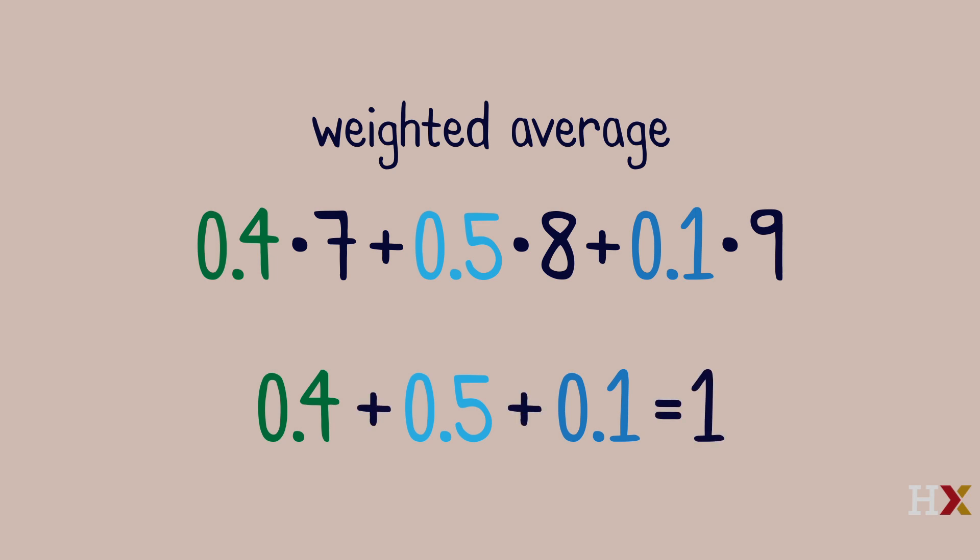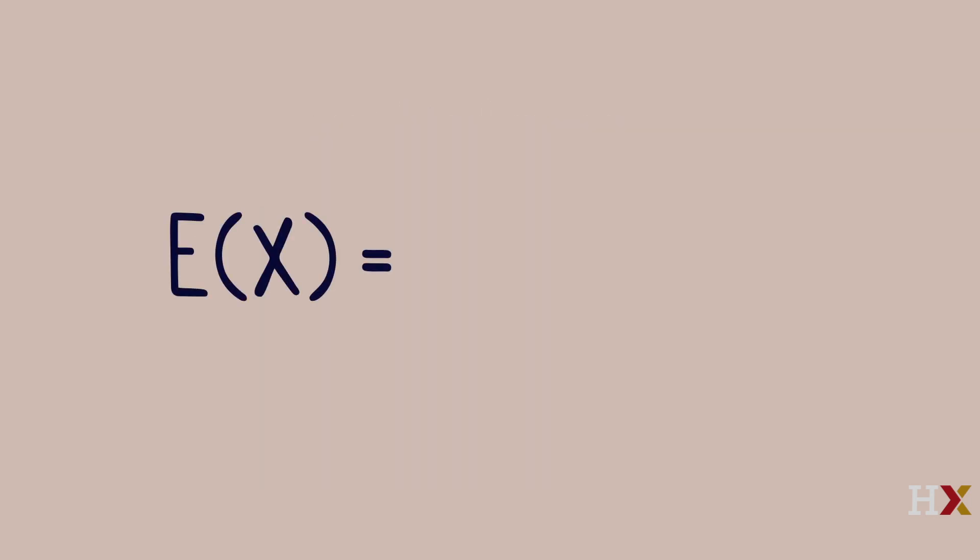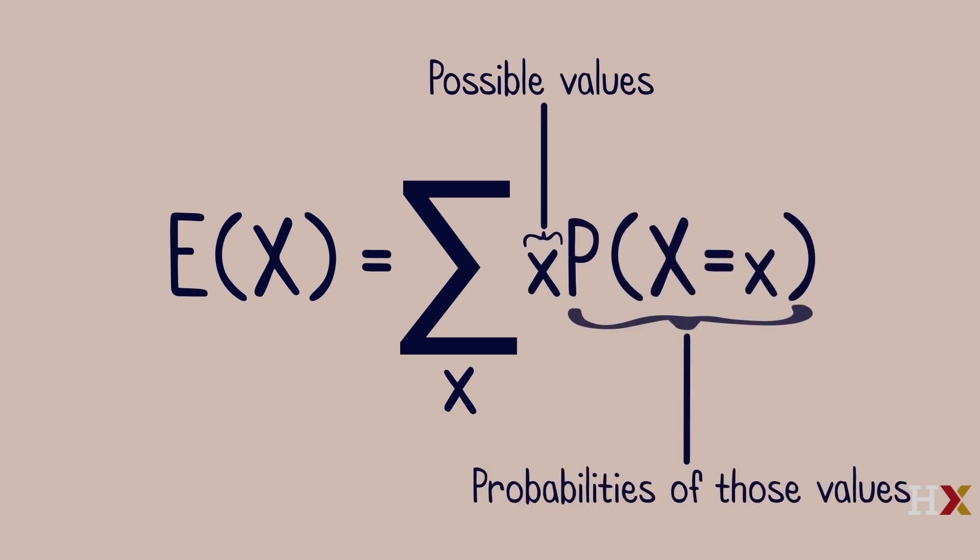Each score is weighted based on the fraction of time it occurred in the sample. In general, the expected value of a discrete random variable X is the sum of possible values times the probabilities of those values.